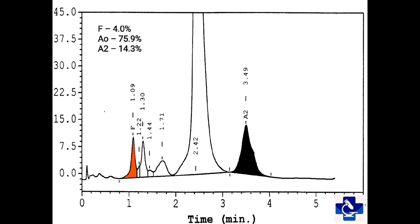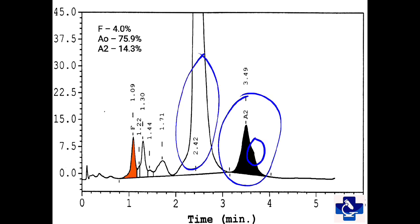In this slide, we can see that A2 is elevated at 14.3% with a bulge on the downward slope of A2. A0 is the major hemoglobin fraction at 75.9%, with slightly elevated fetal hemoglobin at 4%. This is the heterozygote hemoglobin Lepore.